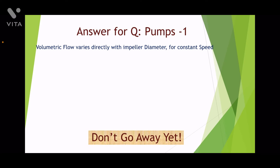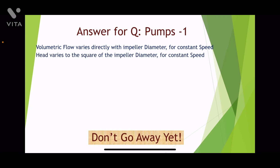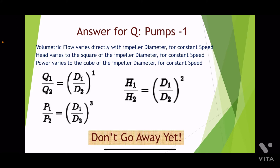The pump affinity law states that the volumetric flow varies directly with the impeller diameter for constant speed. The developed head varies to the square of the impeller diameter for constant speed. The power required varies to the cube of the impeller diameter for constant speed.